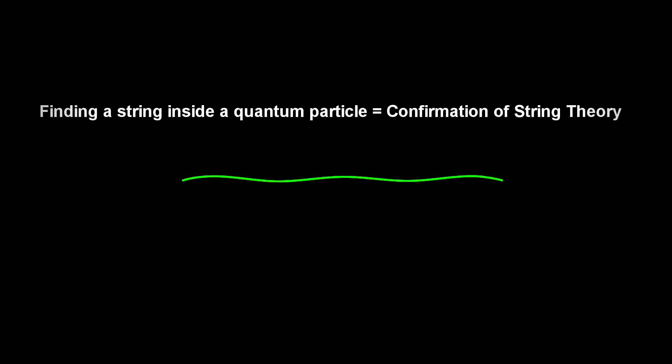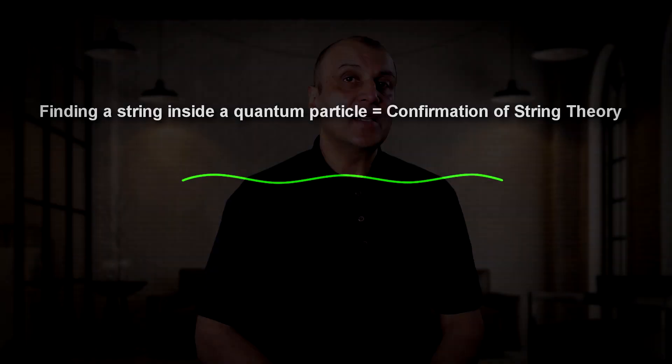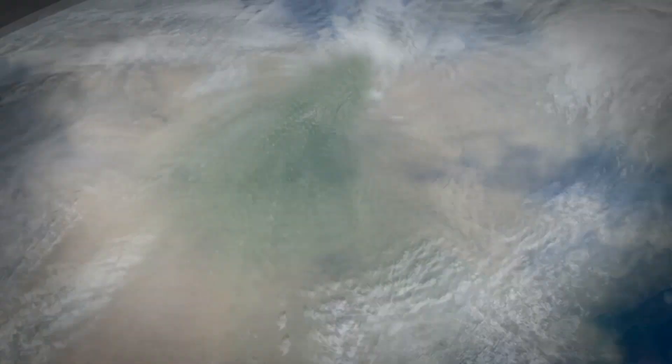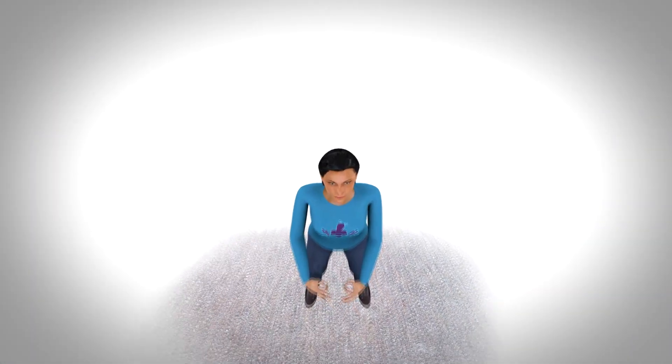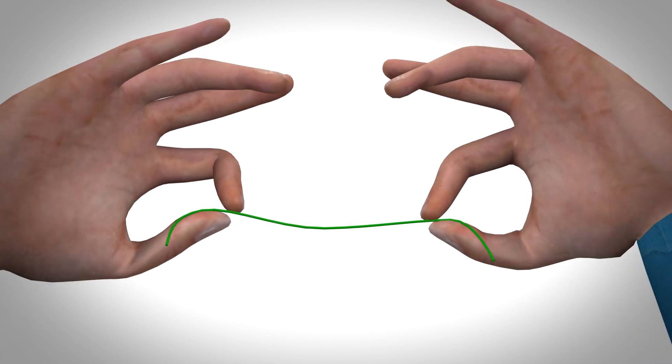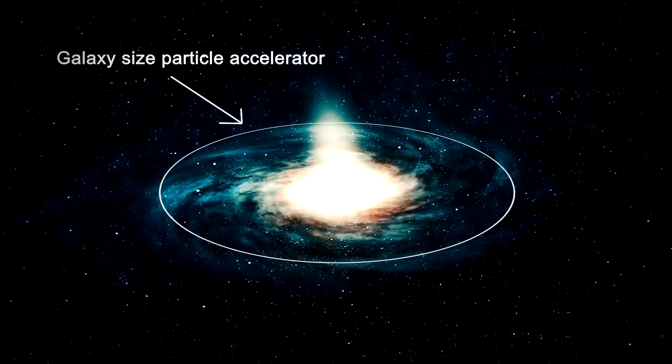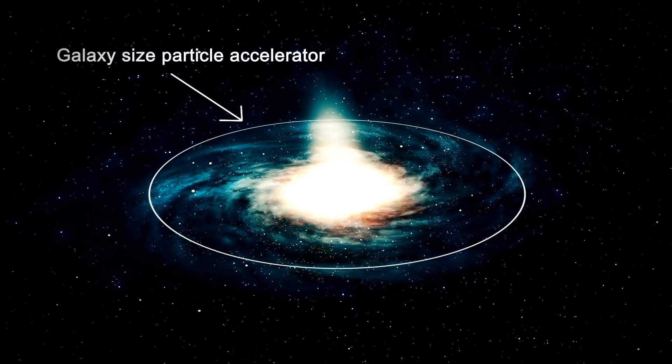There is this nagging problem of confirmation through observation. You might say, well, all we have to do is look inside these elementary particles, and if we find a string, we are done. String theory would be confirmed. The problem is that the math predicts these strings to be extremely small. If an atom was the size of the Earth, one string would be the size of a two-inch piece of yarn. To detect something this small, we would need a particle accelerator the size of the Milky Way galaxy. So detecting them physically is out of the question.